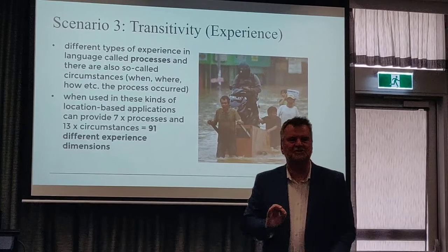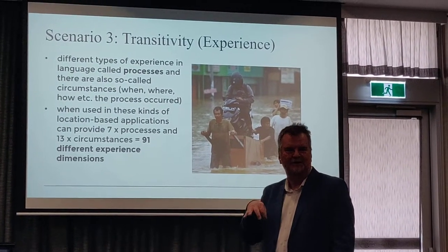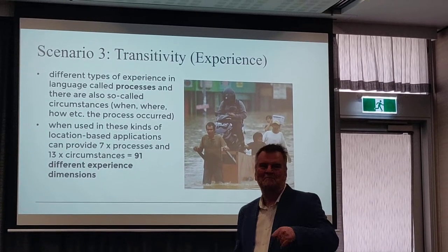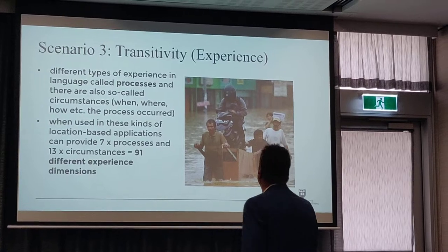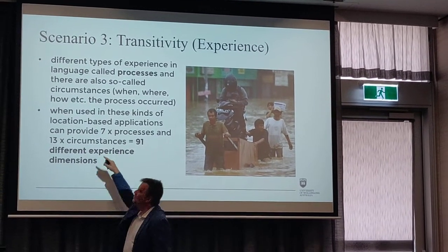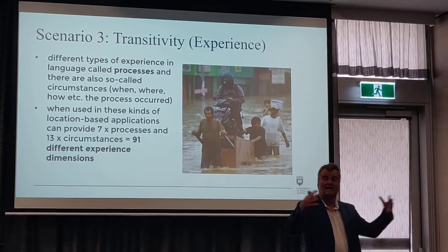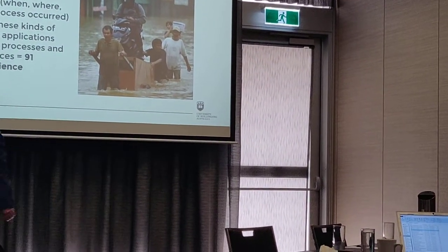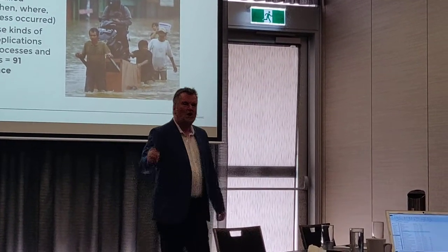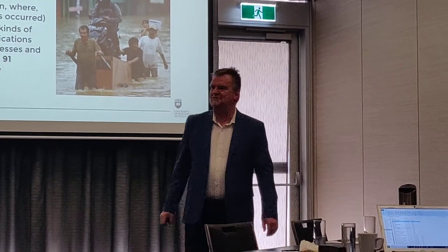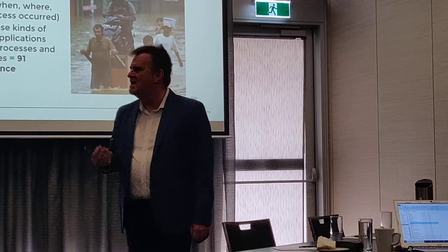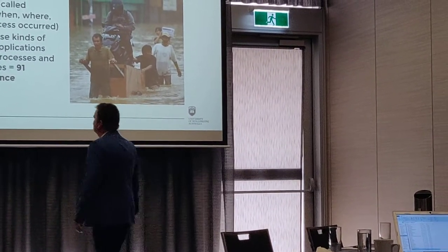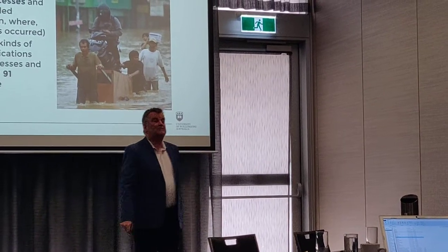Transitivity is how we encode experience into language. It turns out there are only really seven ways we can experience anything — we can think something, we can behave in a way, we can speak, and so on. It might seem terrible to say that all of human experience can be categorised into these seven types, but unfortunately that's true. There are also 13 circumstances — another system in language — involving where something happens, when it happens, and how long it happens for: all the circumstances associated with thinking, feeling, and so on.